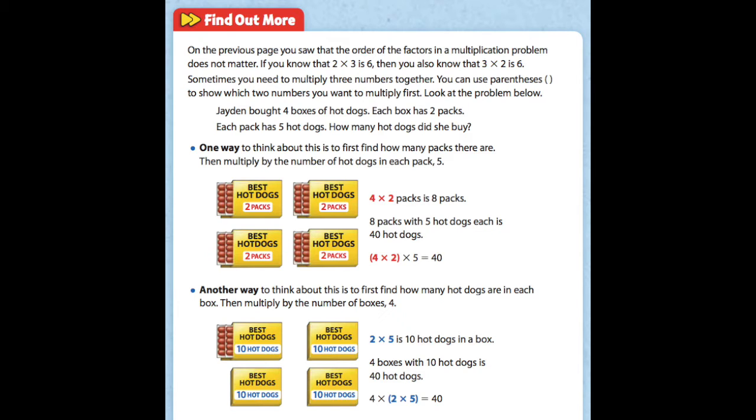Let's take a look at that first set of pictures. It says 4 times 2 packs, because Jayden got 4 boxes, but each box has 2 packs. So we have 4 times 2, our 4 boxes times 2 packs is 8 packs in total. Now we know that we have 8 packs with 5 hot dogs.